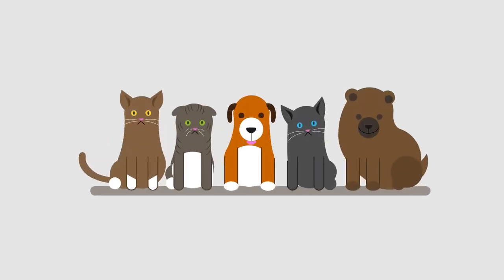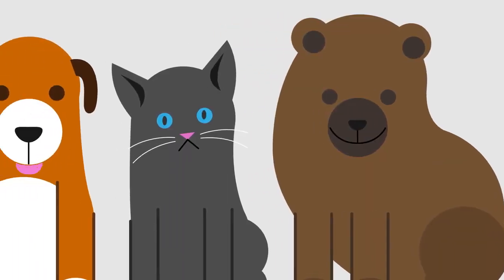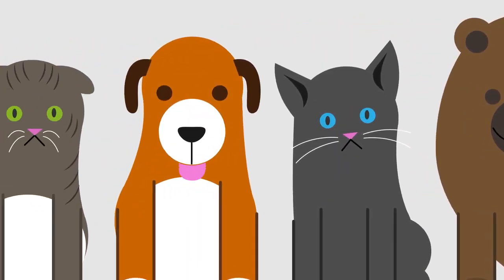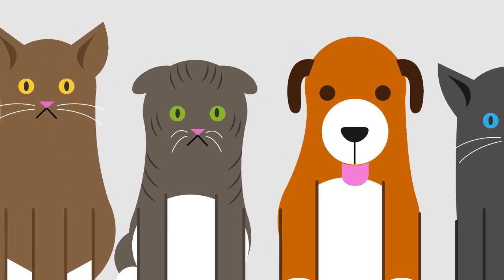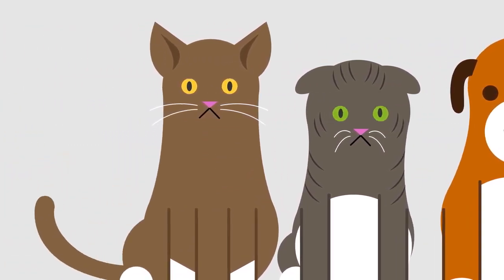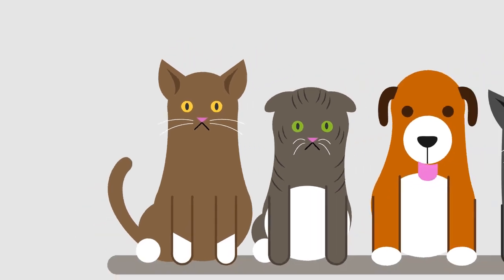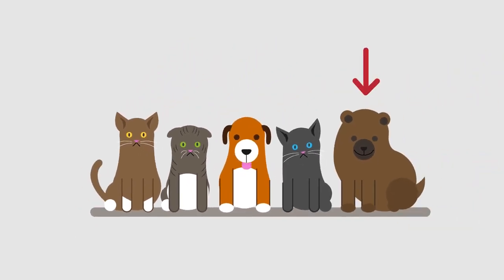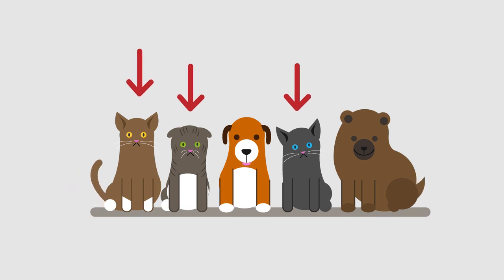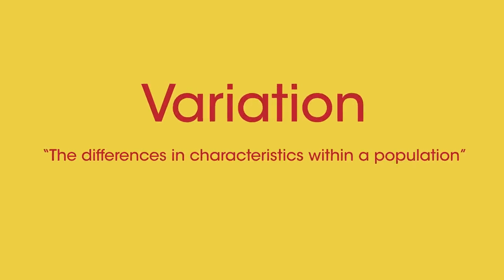Look at these cute baby animals. You will have immediately observed how cute and fluffy they are, but you will also have noticed that they are different — they vary. Yes, some are puppies and some are kittens. There is a great deal of variation between species, but also there is variation within a species. One puppy is fluffier than the other, they have different color fur, and the kittens have different colored eyes.